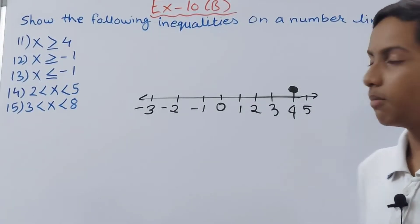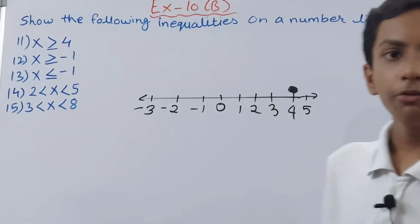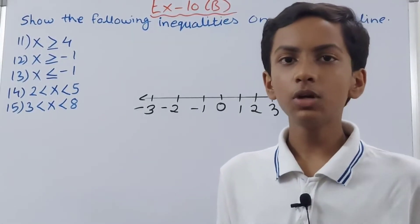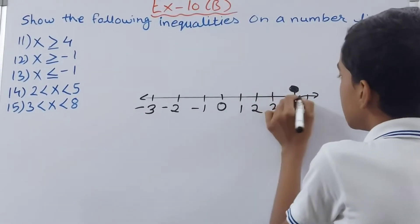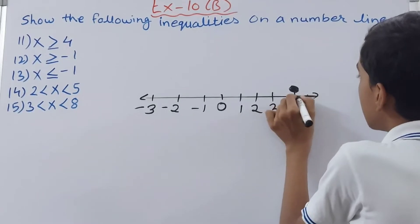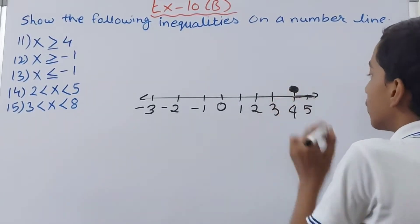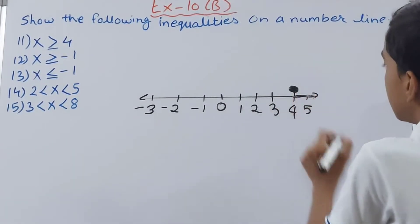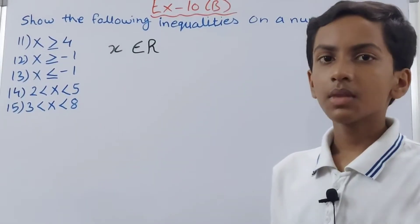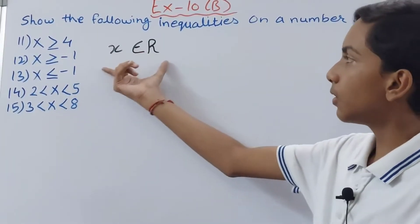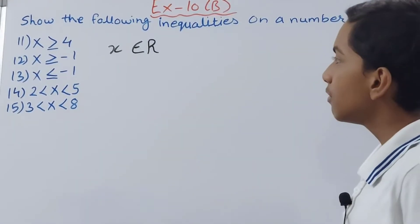Now we do the simple process as we do while representing any inequality: we highlight the area which is greater than 4. This much part is showing the value which is more than 4, so we highlight it. This is how we have represented our first inequality. Also remember to mention that x belongs to real numbers.